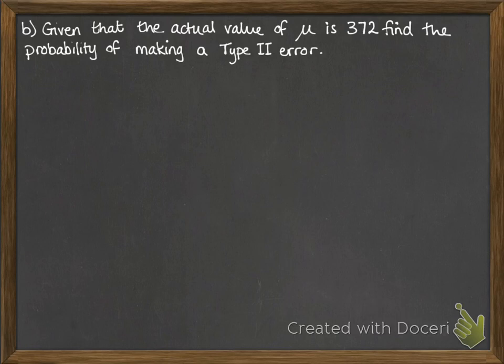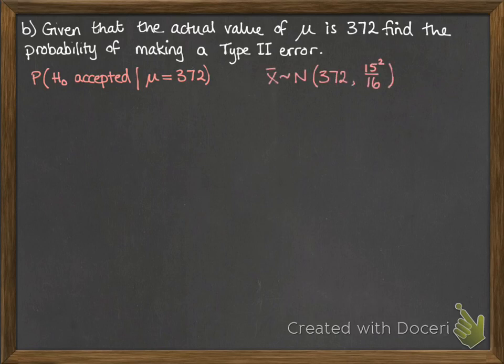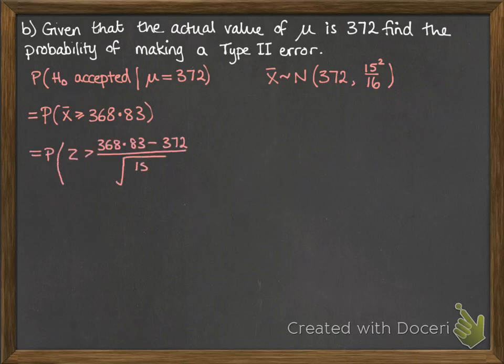Right, now given that the actual value of the mean was 372, find the probability of making a Type 2 error. So we're looking for the probability that we accept the null hypothesis, but the mean was actually 372. Now we've got our sample mean following the normal distribution with a new mean of 372 instead of 375. So we want the probability that x is above that value we just worked out in the first part, meaning it would get accepted, but following the new distribution with a mean of 372.